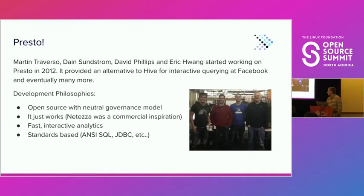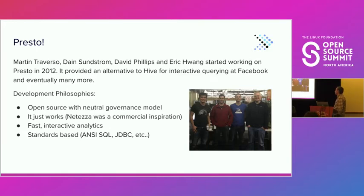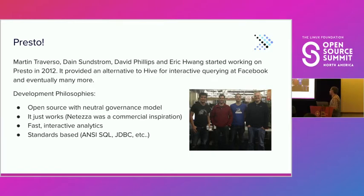It was clear that a better solution was needed for interactive querying. In 2012, Martin, Dain, David, and Eric started working on Presto, providing an alternative to Hive for interactive querying at Facebook. Key development philosophies included the open-source model — the project is 100% open-source — and making the project just work with no external dependencies like MapReduce. You just deploy it and it runs. It was designed for fast and interactive analytics, with strong adherence to open standards like ANSI SQL and JDBC.